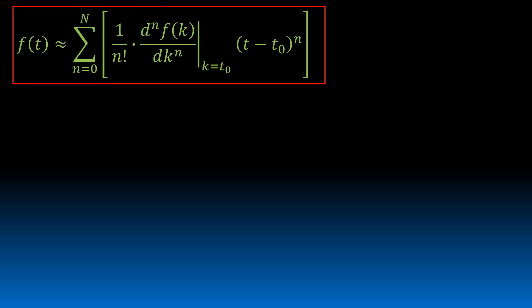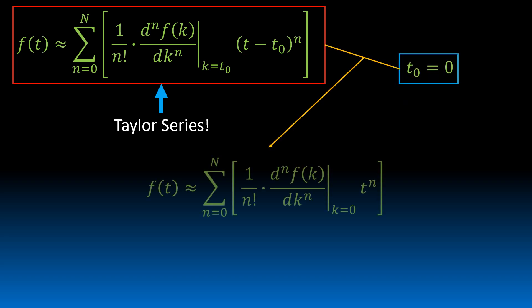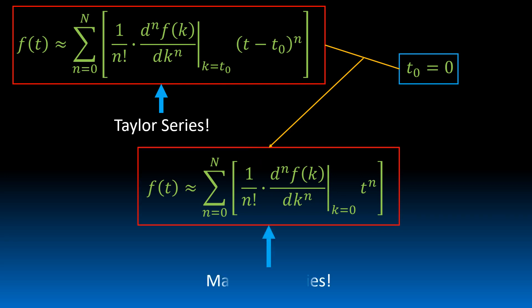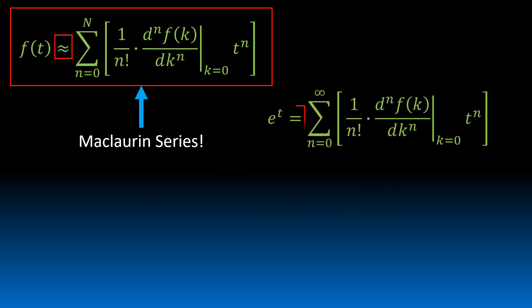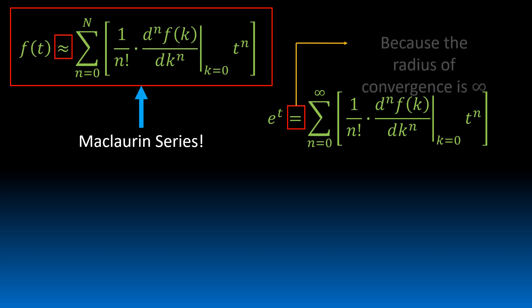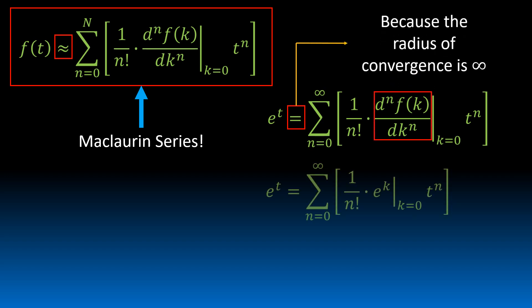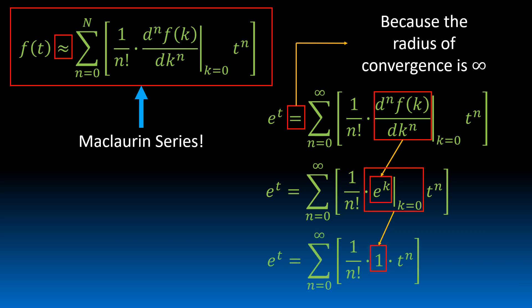Now that we know that the derivative with respect to a variable of e to that variable is equal to e to that variable, we're going to consider the Maclaurin series. We're going to say that e to the t is equal to that series because the radius of convergence is infinity. We know the derivative with respect to any variable of e to that variable is equal to e to that variable, and e to that variable evaluated at 0 is equal to 1.